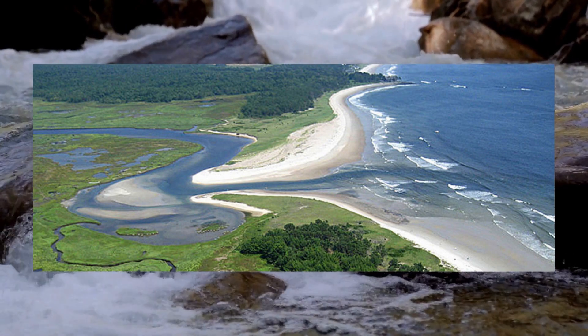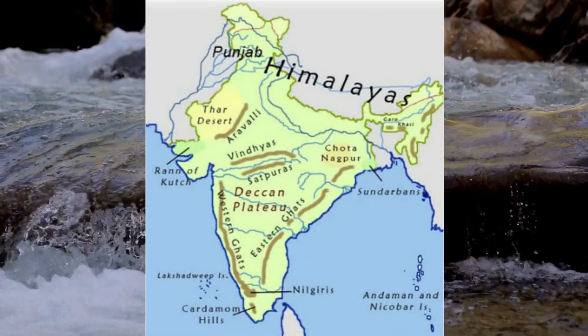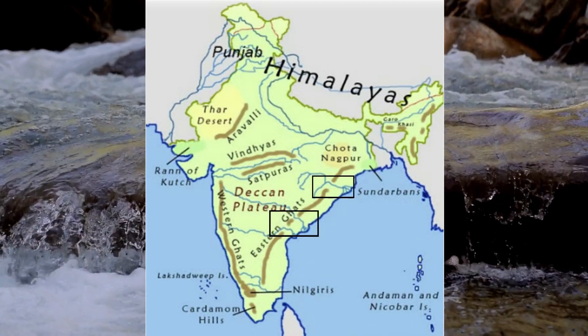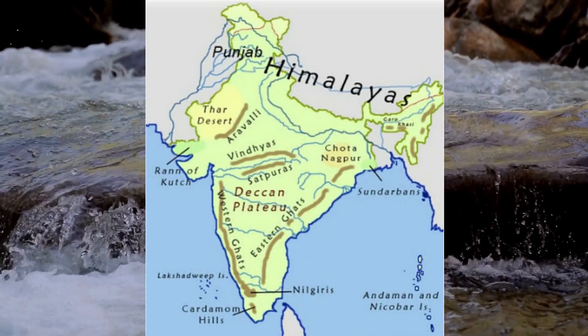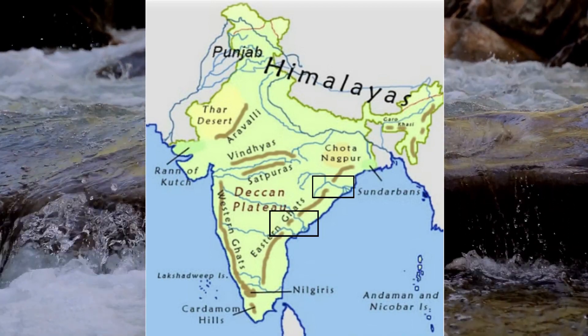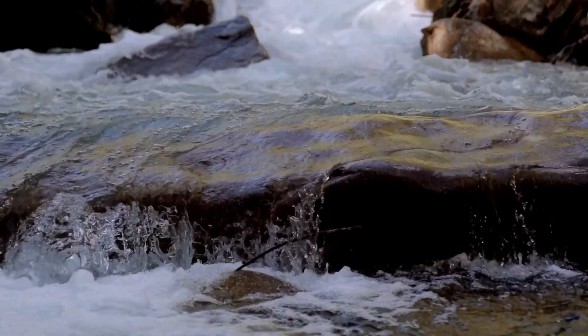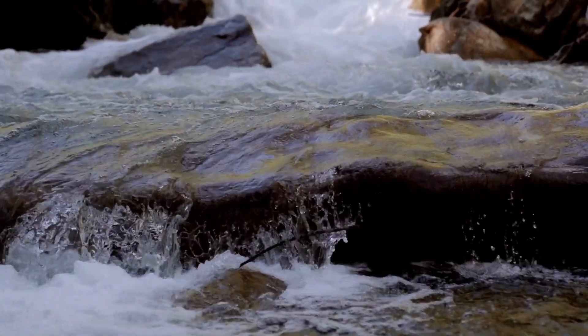Whereas the eastern rivers flow through broken hills and mountain ranges, so they are widened and flow with less velocity, depositing sediments and silt before entering the sea and forming a delta.